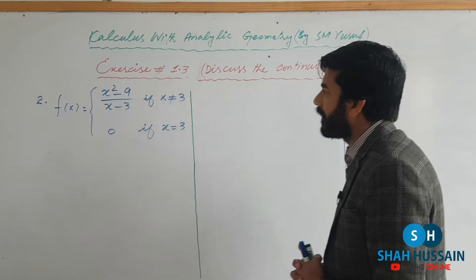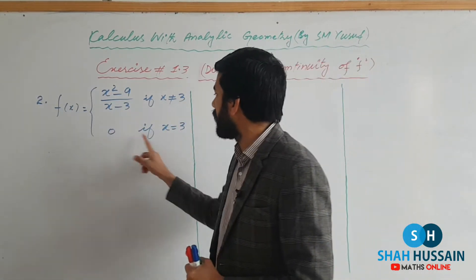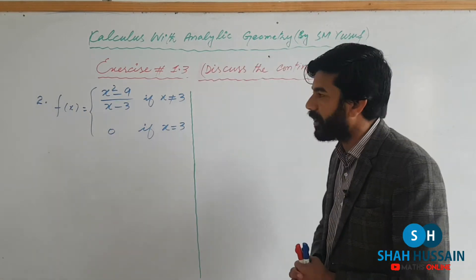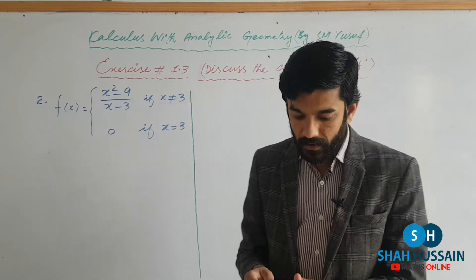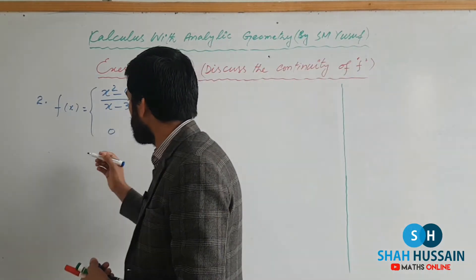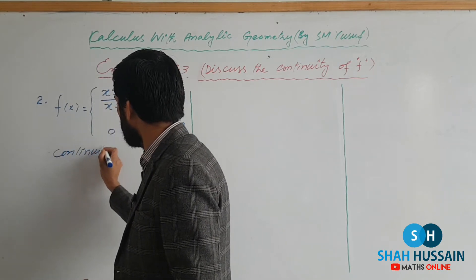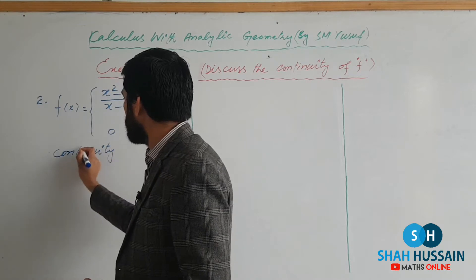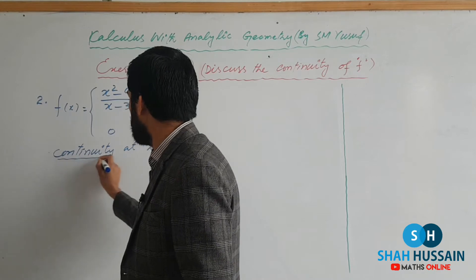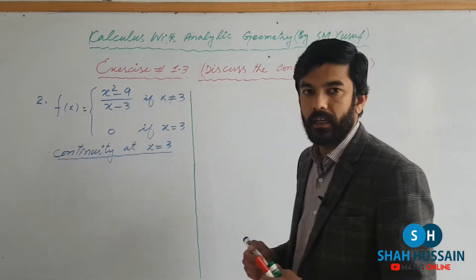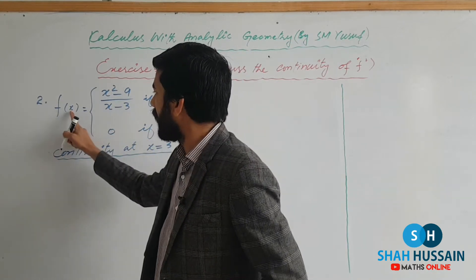We have Question Number 2: a piecewise function — (x² - 9)/(x - 3) if x is not equal to 3, and 0 if x is equal to 3. We have to check continuity at x = 3.